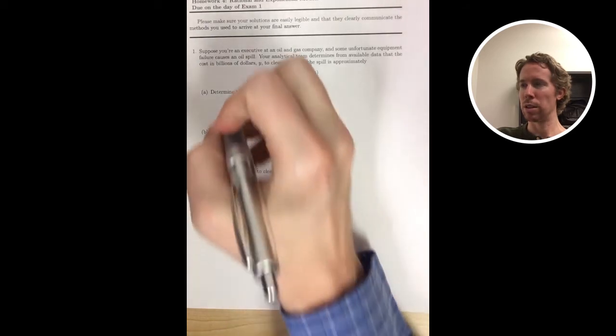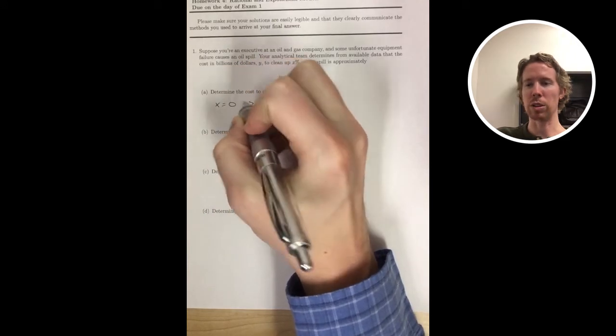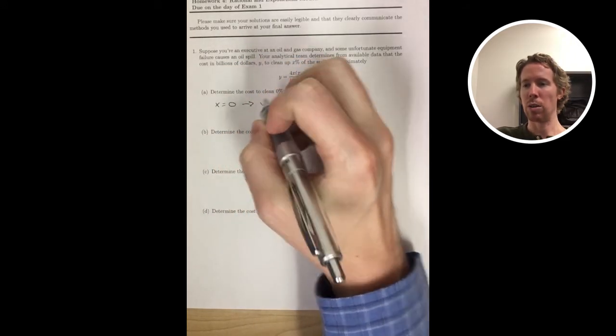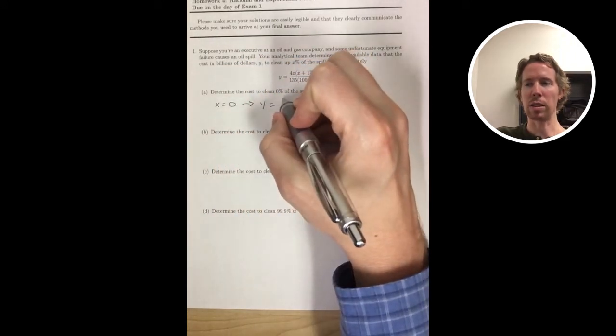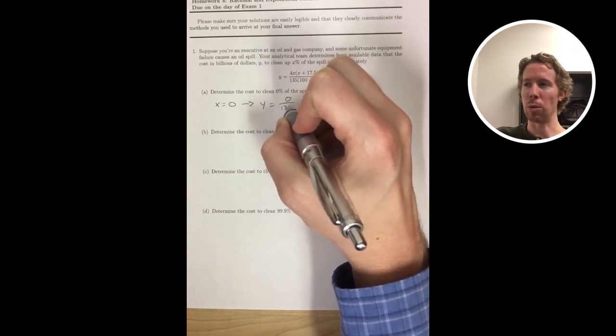All right, on number one, the first thing that I would notice here is that we've got a rational equation. So I know in the graph to look for vertical asymptotes. I know it's not going to be a straight line or a parabola or a cubic graph.